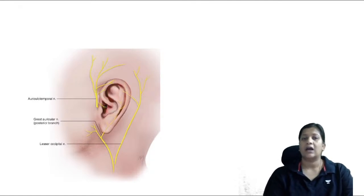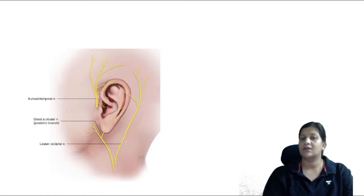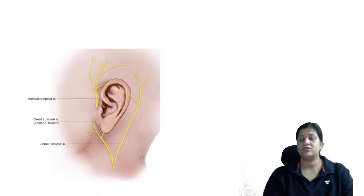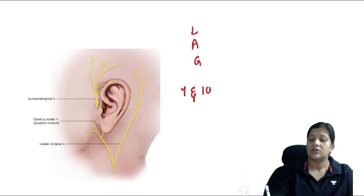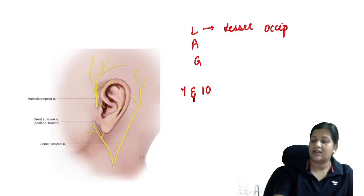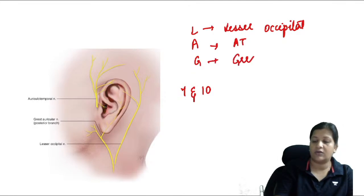Let's discuss the nerve supply of the external auditory canal — a common, repeat question in FMG exams. The mnemonic is LAG 7 and 10: L for Lesser occipital nerve, A for Auriculotemporal nerve, and G for Greater auricular nerve — the three main nerves supplying the pinna.